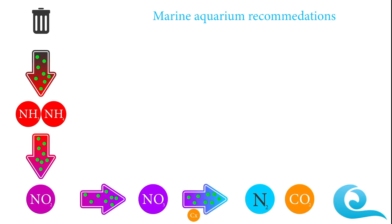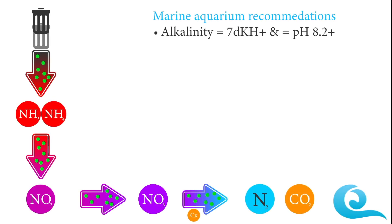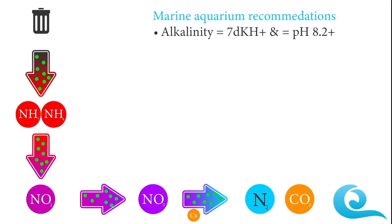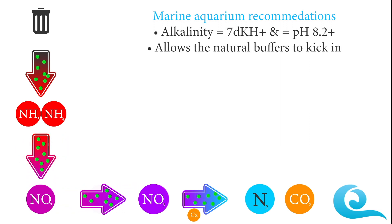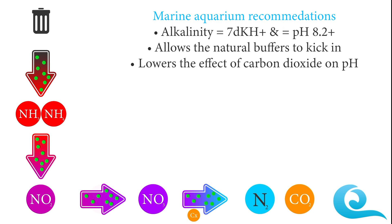In order to combat this, we recommend having an alkalinity of 7 dKH or higher and a pH of 8.2 or higher. This allows your natural buffers to kick in and stop the CO2 from lowering your pH.